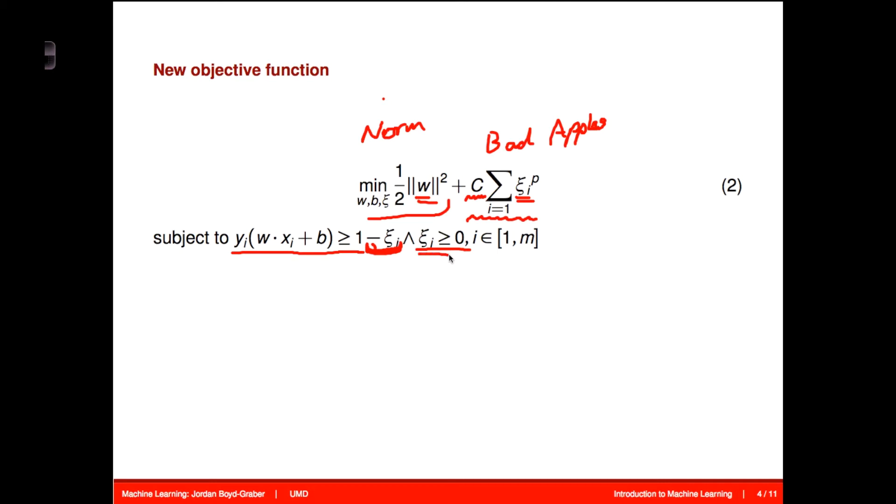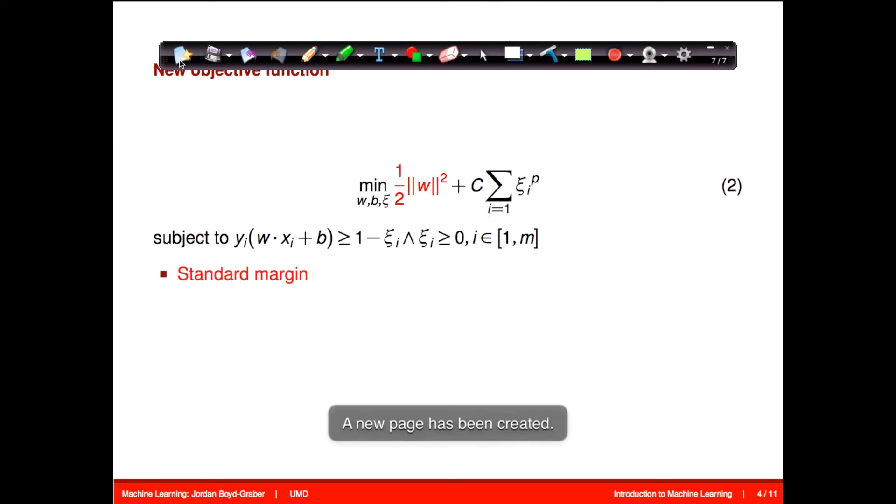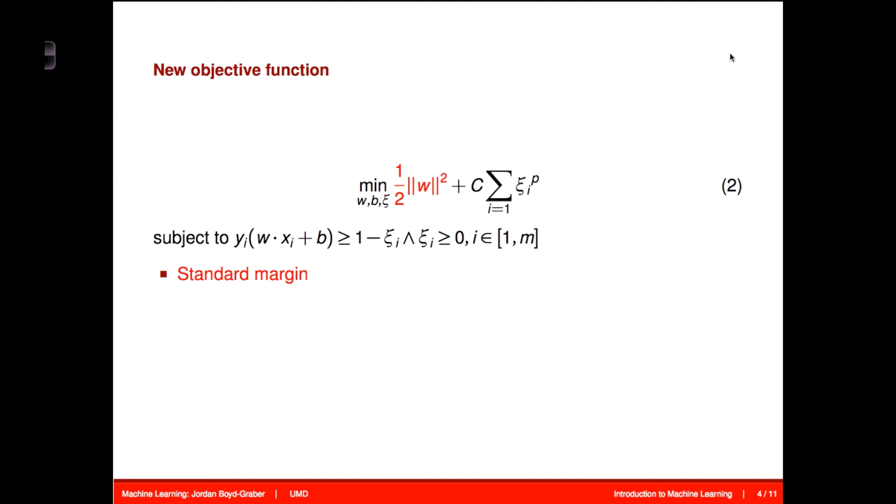We'll also assume that these slack variables are all greater than or equal to zero. So just to recap: this is our standard margin, the ξ variable keeps track of how wrong a point is, and the C variable trades off between the standard margin objective and how much we get wrong on the slack variables.